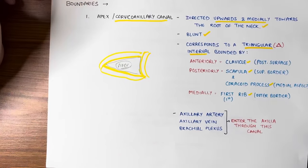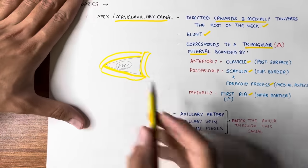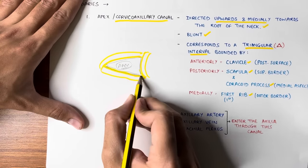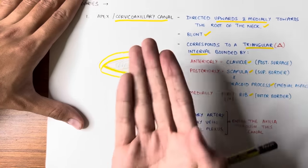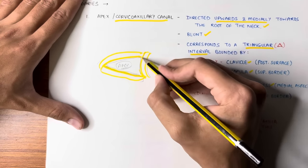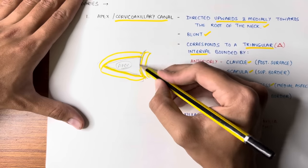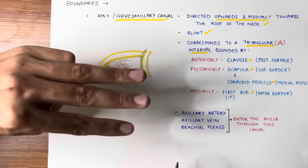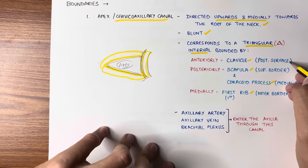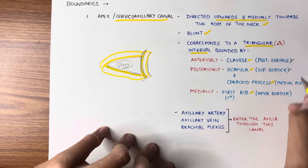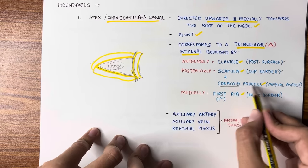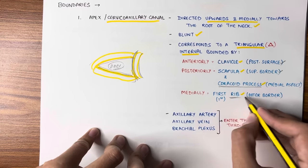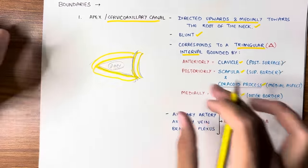If asked, the apex of the axilla is bounded by: anteriorly — the posterior surface of the clavicle; posteriorly — the superior border of the scapula (including the coracoid process); and medially — the outer border of the first rib. So those are the three boundaries forming the triangular apex.